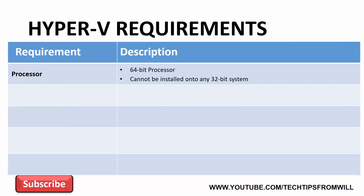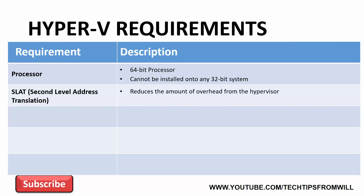However, as well as having a 64-bit architecture, your server's processor must also support some additional features. The first of these is SLAT, or Second Level Address Translation. Second Level Address Translation is a feature that reduces the amount of overhead generated from the hypervisor. By reducing the load on the hypervisor, Second Level Address Translation essentially frees up CPU cycles for your virtual machines.